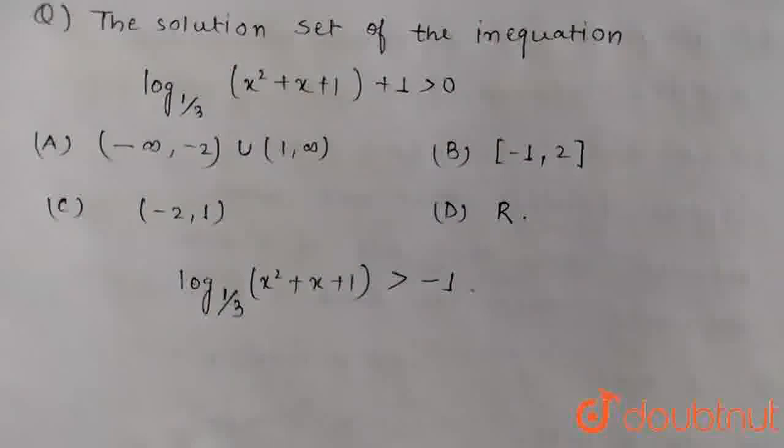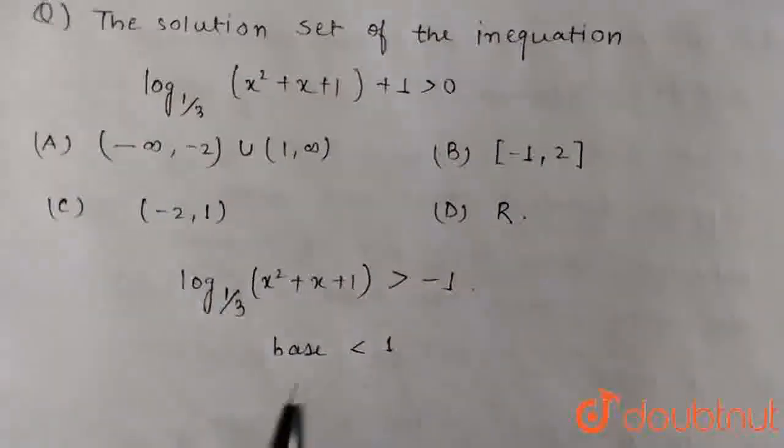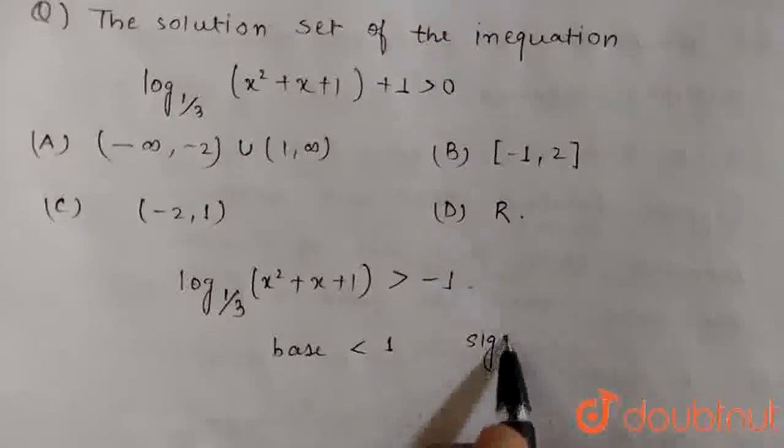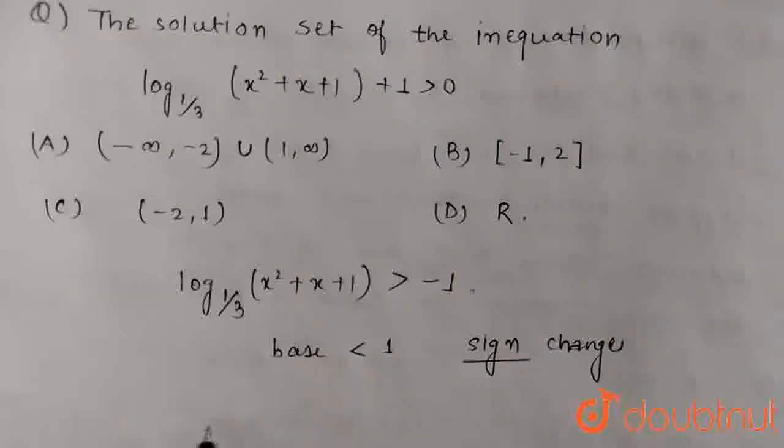When base is less than 1, sign changes. Sign changes using the property, basic property of logarithm.